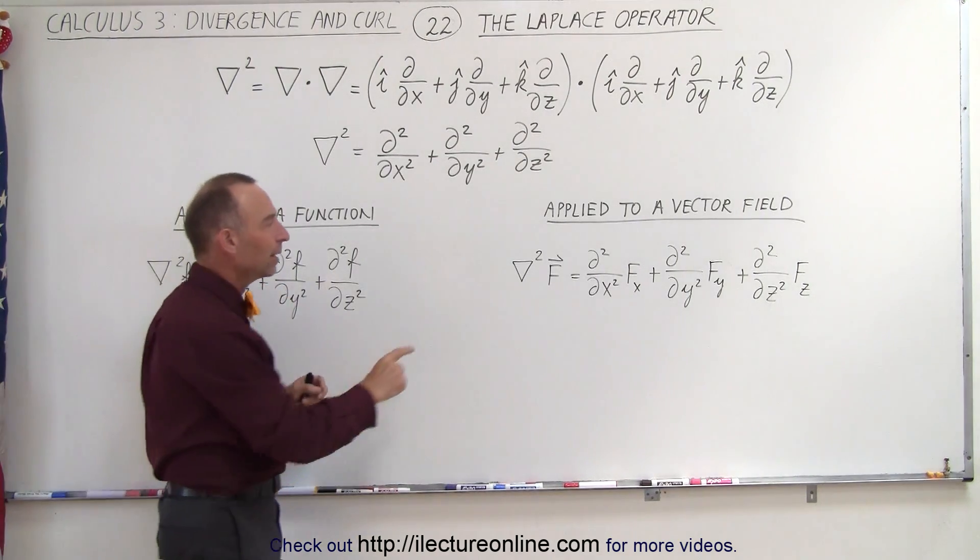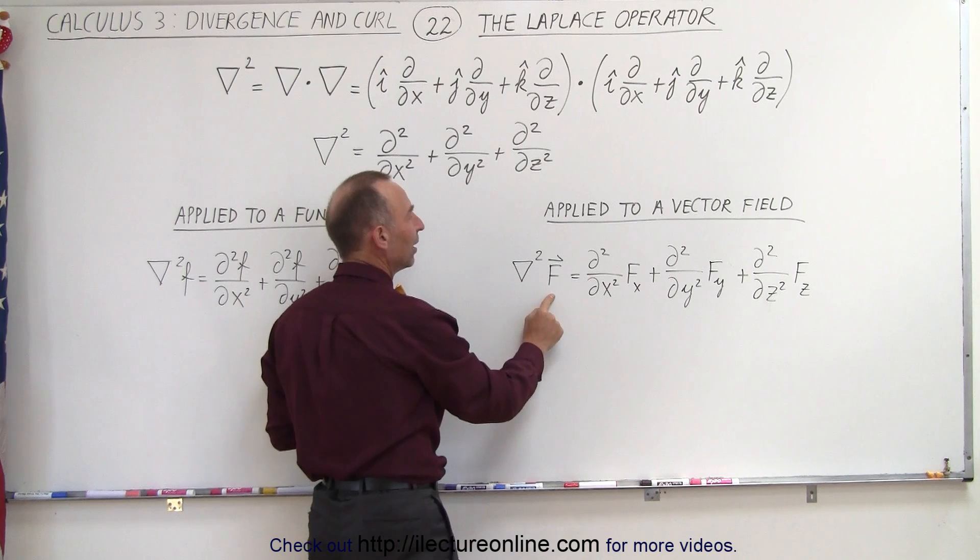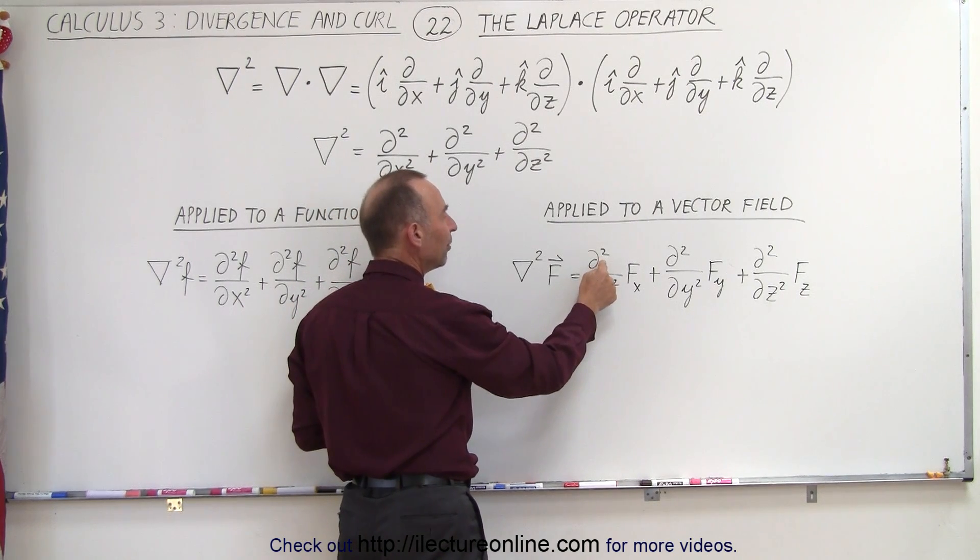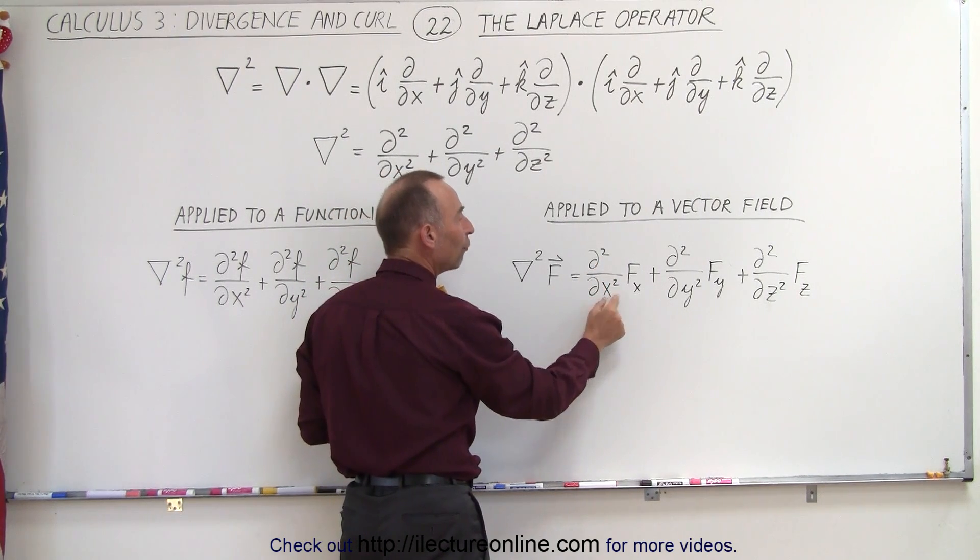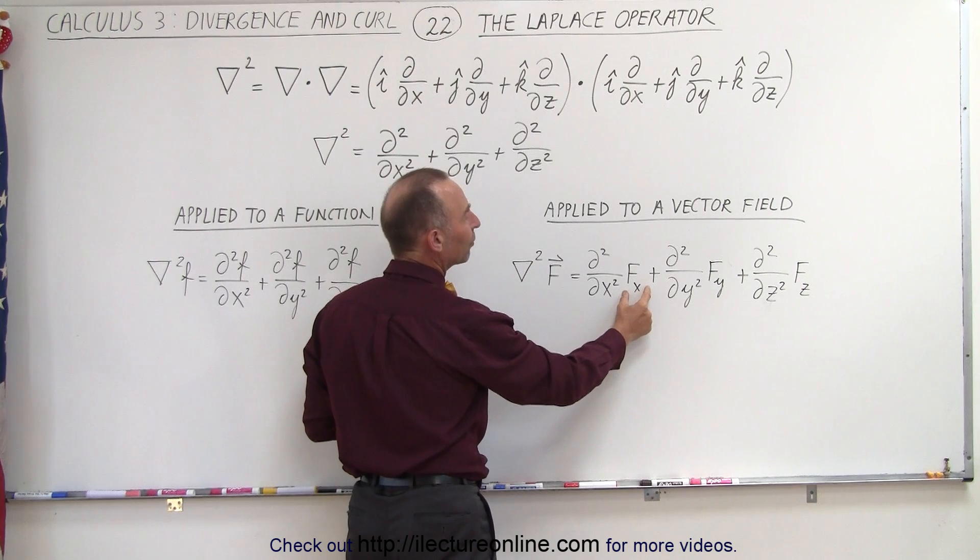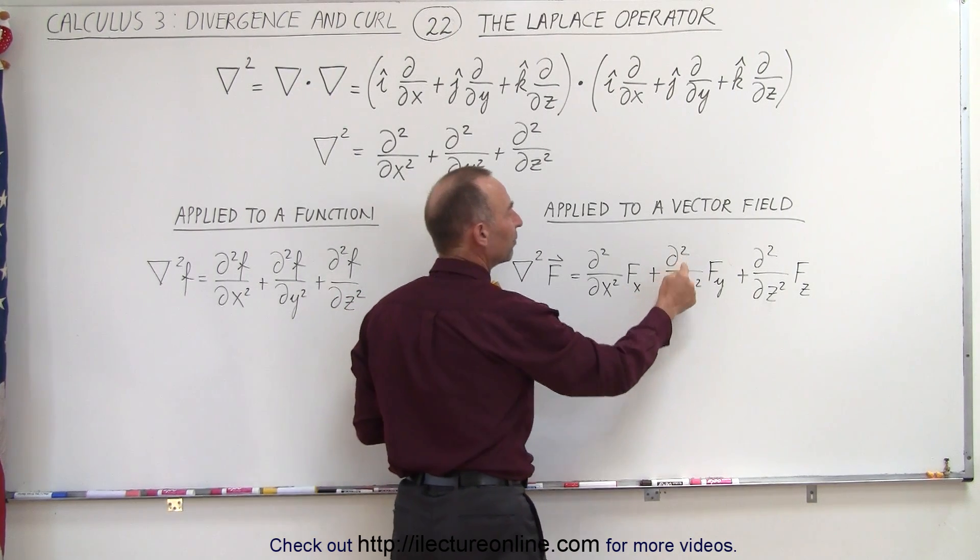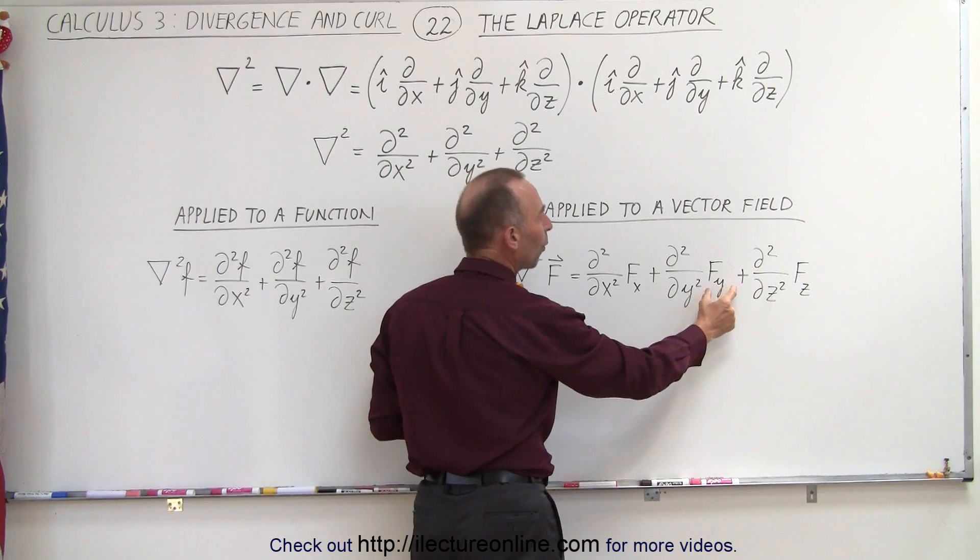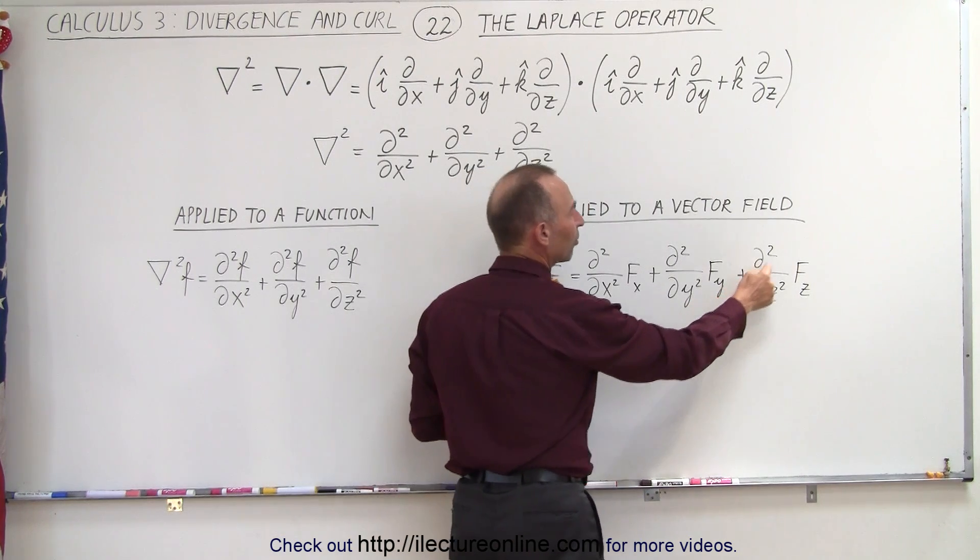But if we apply the del squared operator to a vector field, we take the second partial derivative with respect to x of only the x component of the vector field, plus the second partial derivative with respect to y of only the y component of the vector field,